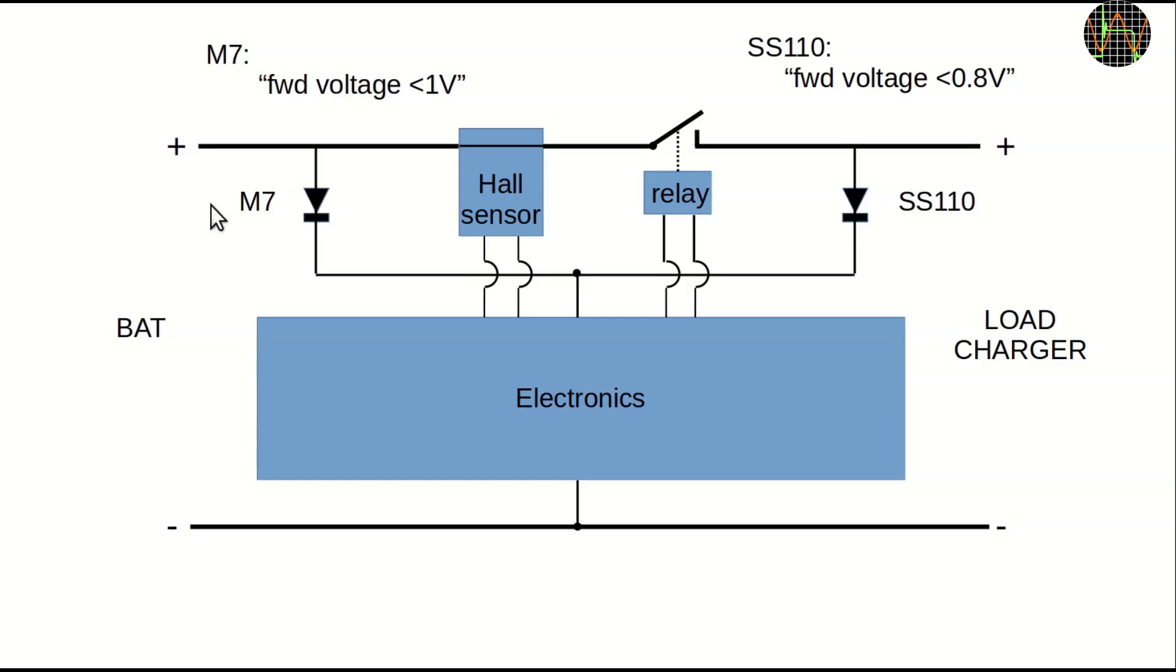On the battery side, the diode is an M7, a normal rectifier diode, while on the load-charger side, the diode is an SS110 which is a Schottky type. The datasheets do not specify the actual forward voltage only that the M7 is less than 1V and the Schottky less than 0.8V, but this difference is crucial in how the circuit works because of the lower drop. The SS110 offers a slightly higher voltage to the electronics and therefore the operating current will be drawn through the Schottky diode whenever possible.